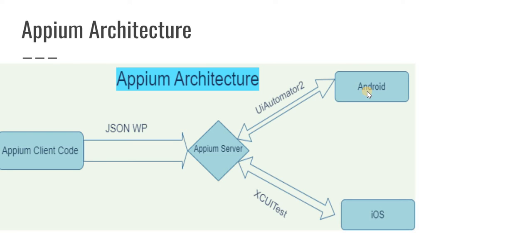You can execute your code on a physical device by connecting it to your machine. There are settings you need to activate so your physical device can communicate with the Appium server, allowing it to push and execute your code on the physical device. Alternatively, there are virtual devices available for Android through Android Studio — using the emulator you can choose from a number of different Android virtual devices and perform execution on those virtual devices as well.